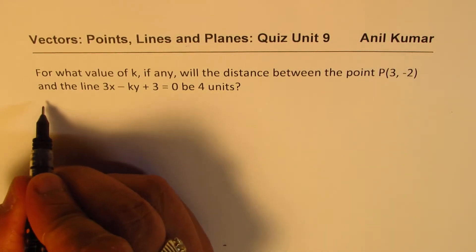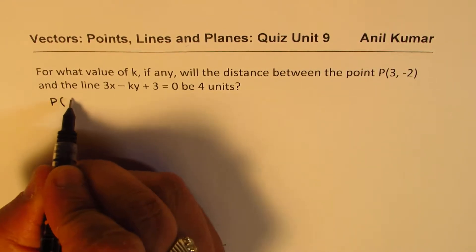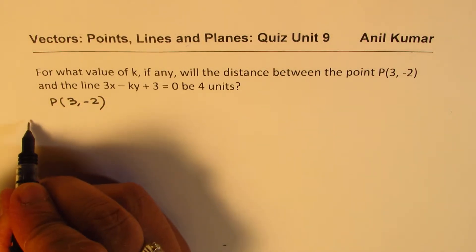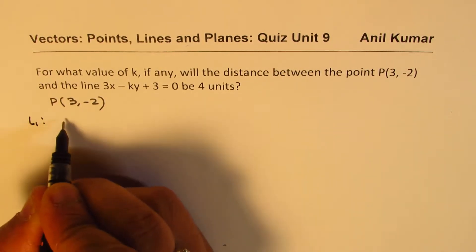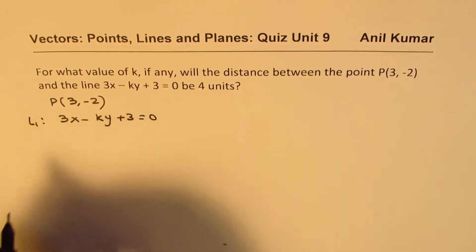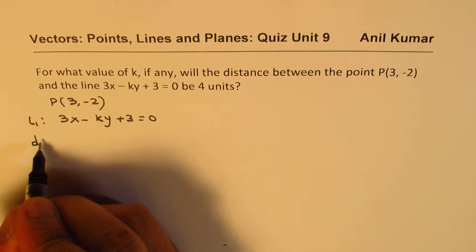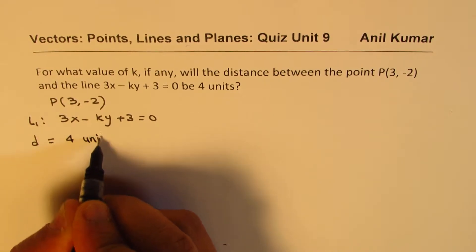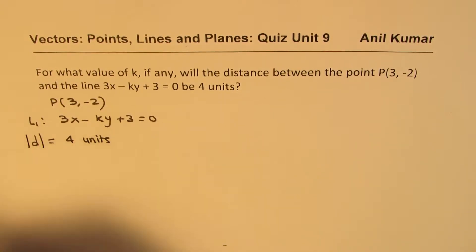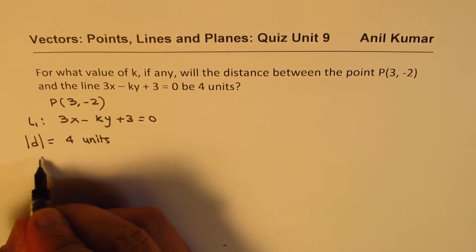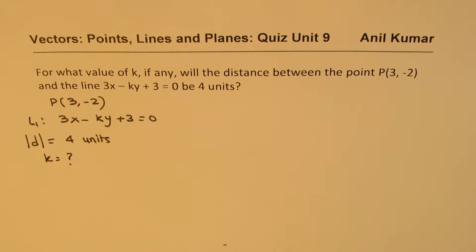Well, in the given form, since we are given a point here, which is (3, -2), we are given a line here, so the line given to us is 3x - ky + 3 = 0. We want distance equal to 4 units. So the absolute value of distance is 4 units. For that, we want to find what is the value of k. That is the question for us.